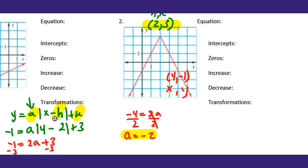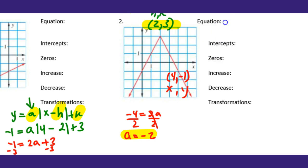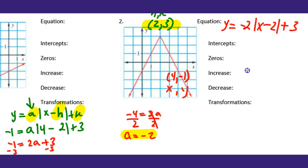Now that I have a = -2, h = 2, k = 3, I can plug those into the equation: y = -2|x - 2| + 3. That confirms: minus 2 means right 2, and positive 3 means up 3. The negative a says it opens down — flipped over. The vertex is at (2, 3).